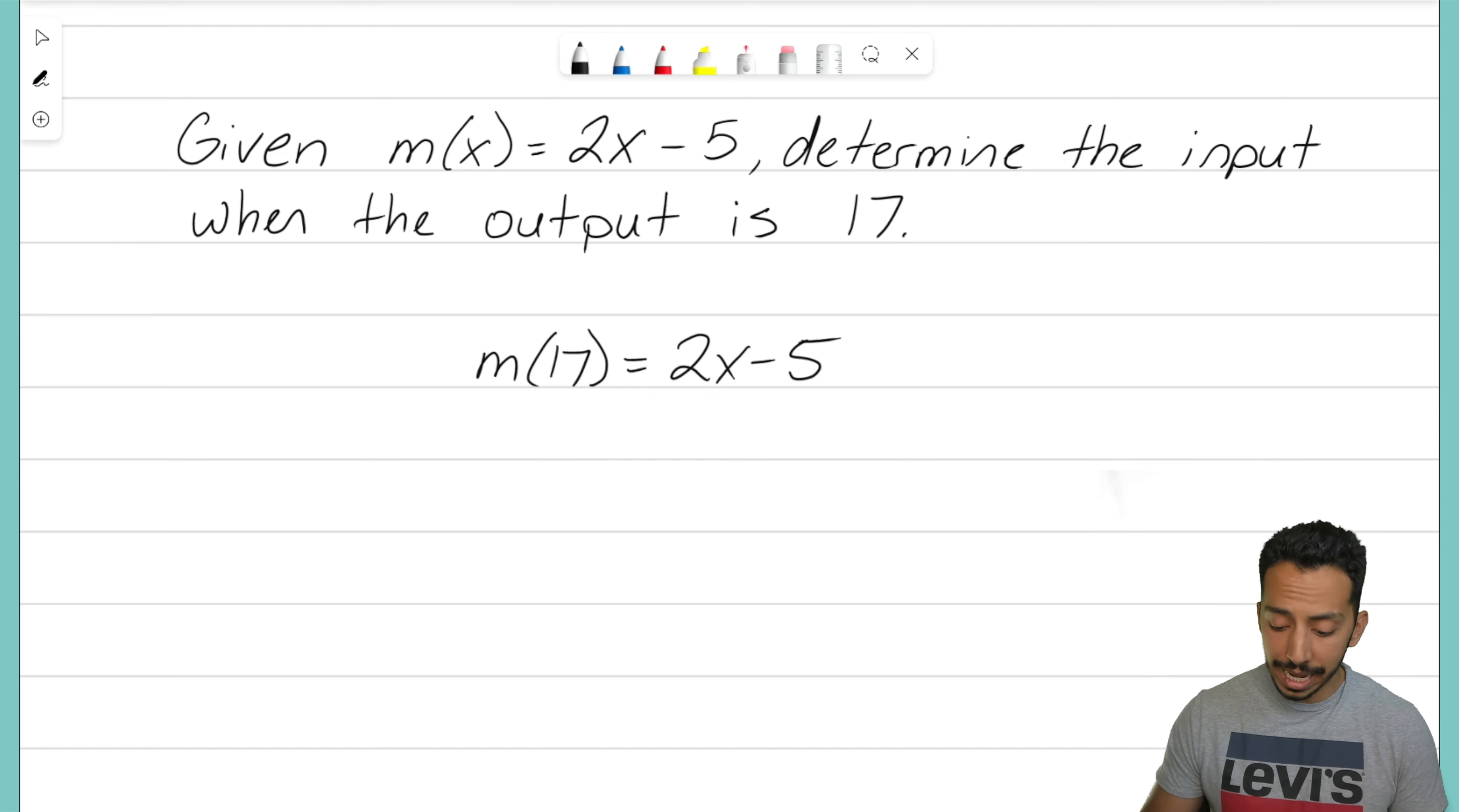No, we don't know what x is. So instead of doing that we actually want to erase the left side of our function there and instead replace it with 17. We know that when we drop an x value into 2x minus 5, the output is going to be positive 17.